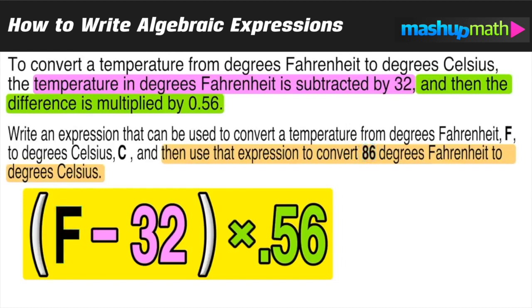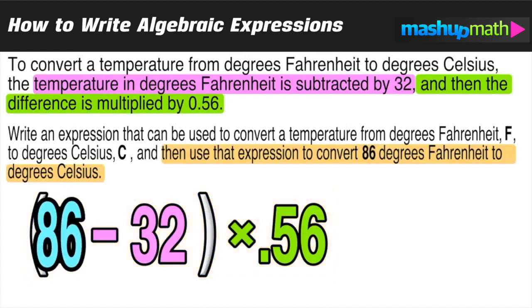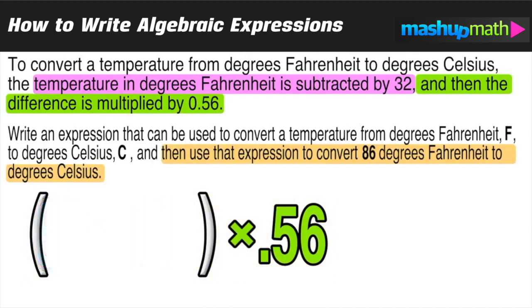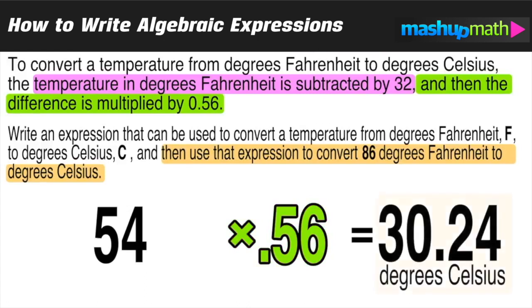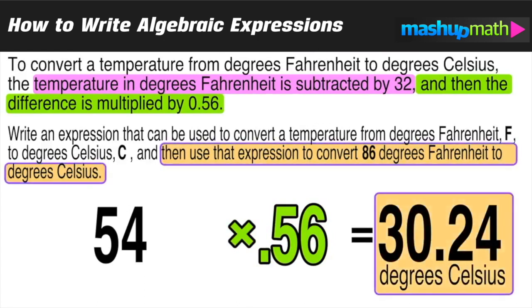So I'm going to replace that F with 86, and now all we have to do is evaluate. 86 minus 32 equals 54, and 54 multiplied by 0.56 is equal to 30.24, which is the number of degrees in Celsius.